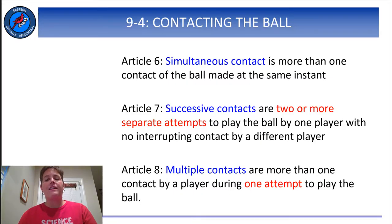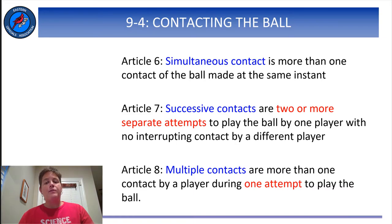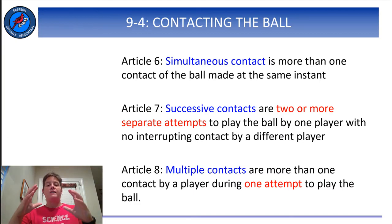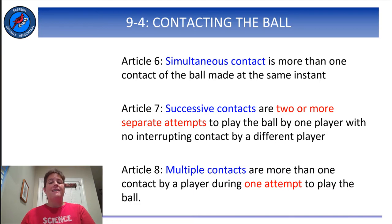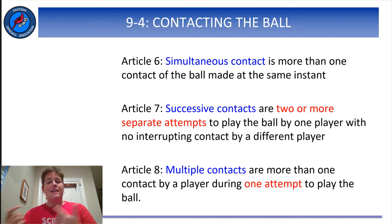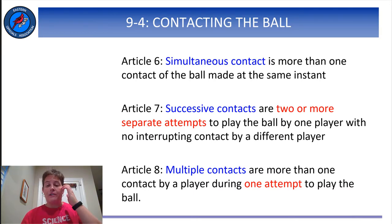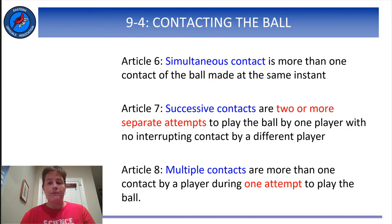Articles 6, 7, and 8 define simultaneous, successive, and multiple contacts. Simultaneous contact can be made by players on the same team or by players on opposite teams, but the requirement is that the contacts happen at the same moment. The rulebook also states that simultaneous contact by teammates is counted as only one hit, and that any player may play the next ball as long as the team has hits remaining. Successive contacts and multiple contacts, by contrast, are made by the same player — the only difference is whether the player makes contacts in two separate attempts or in one single attempt. Multiple contacts are allowed on the first team hit.